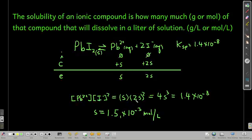And so plugging into the equilibrium expression, Ksp, we get S times 2S squared or 4S cubed. Solving for S, and we know what Ksp is, we get 1.5 times 10 to the minus 3 moles per liter. Because S is how many moles of lead 2 iodide will dissolve in a liter, that's the solubility in terms of moles per liter.